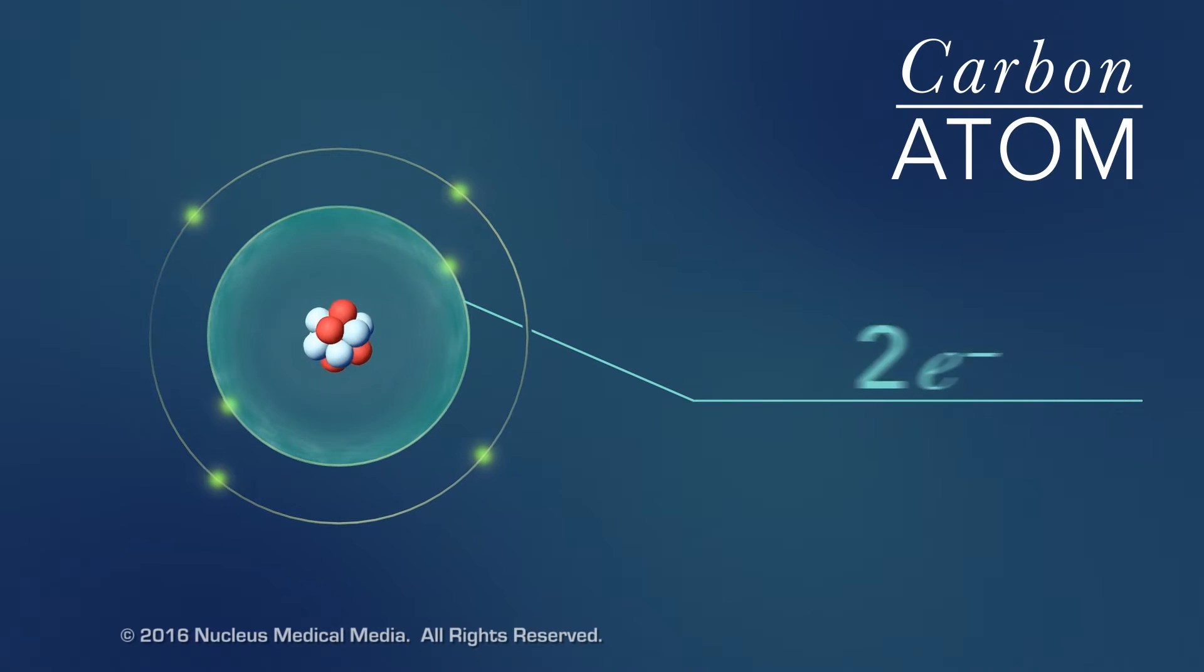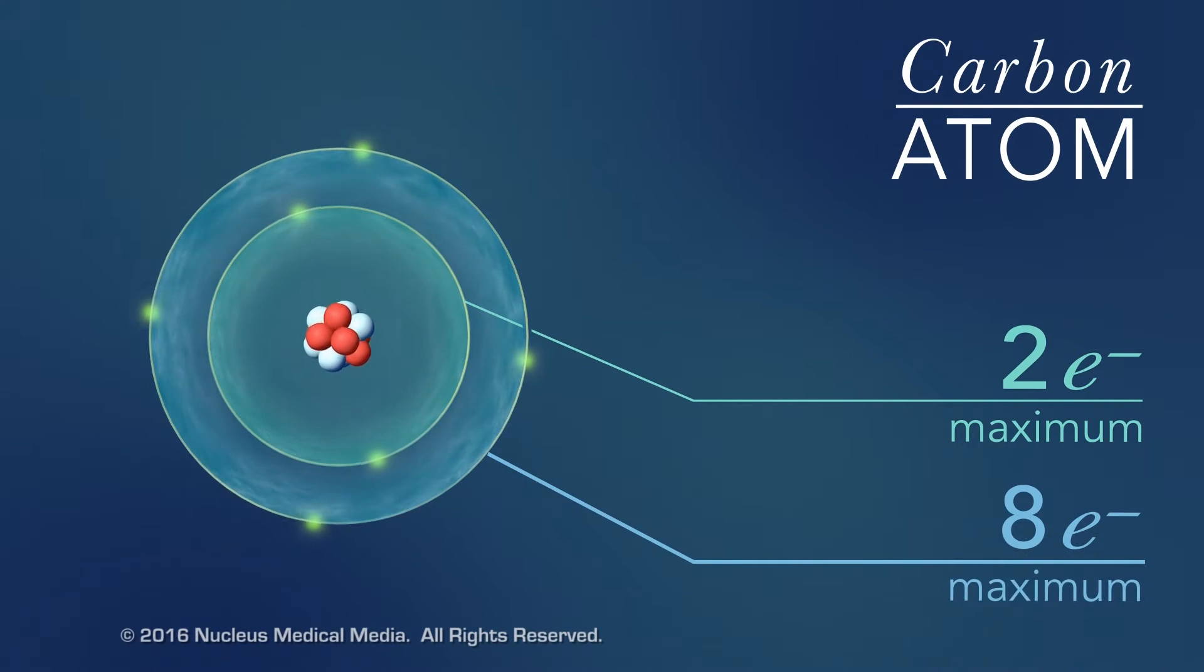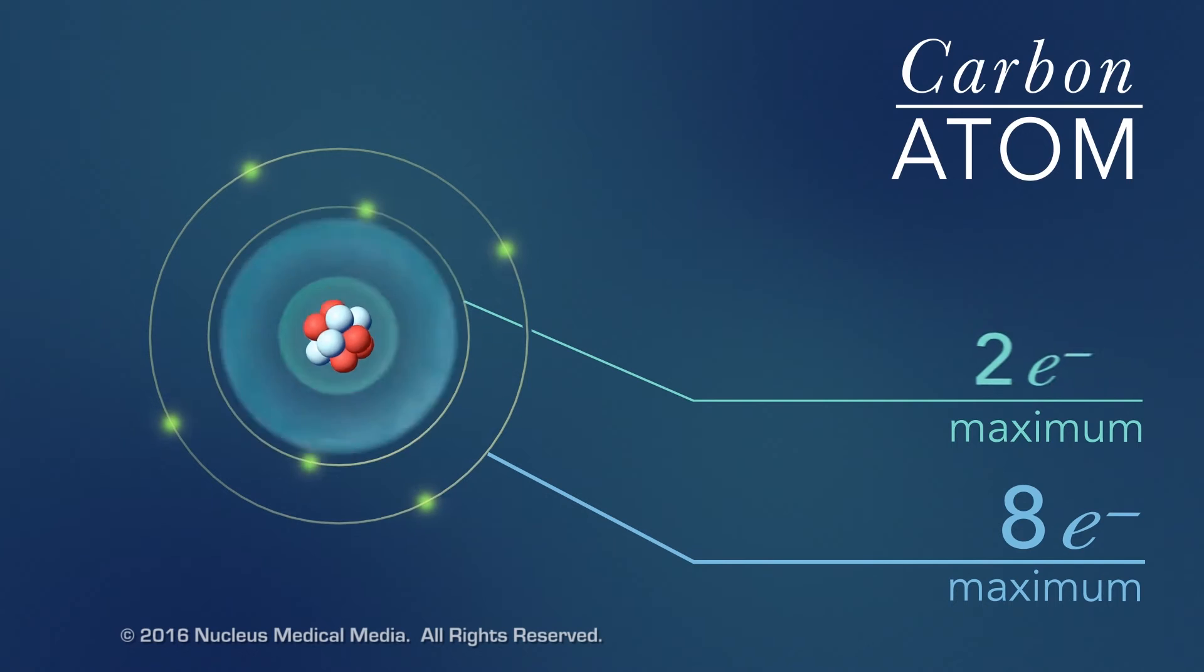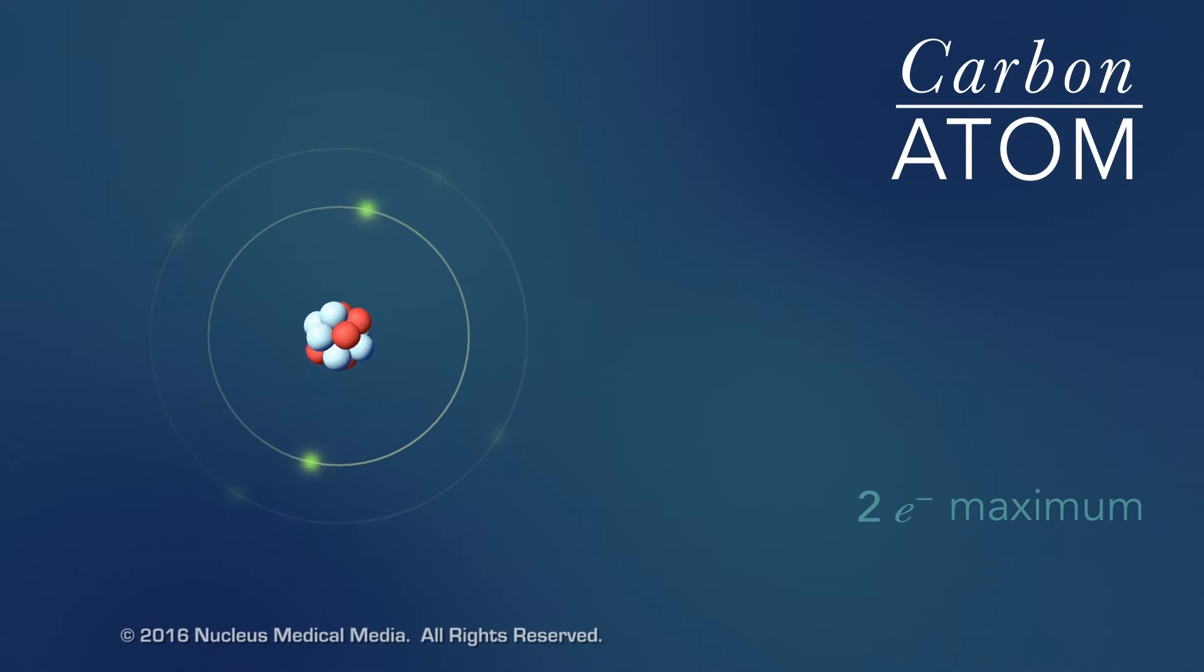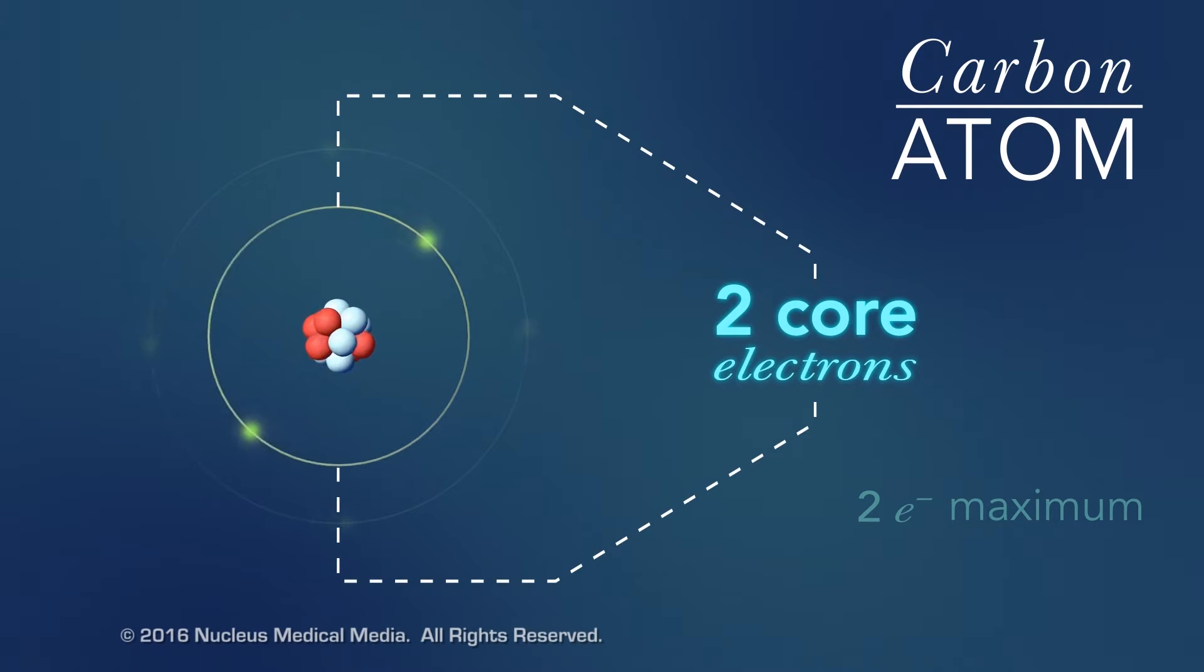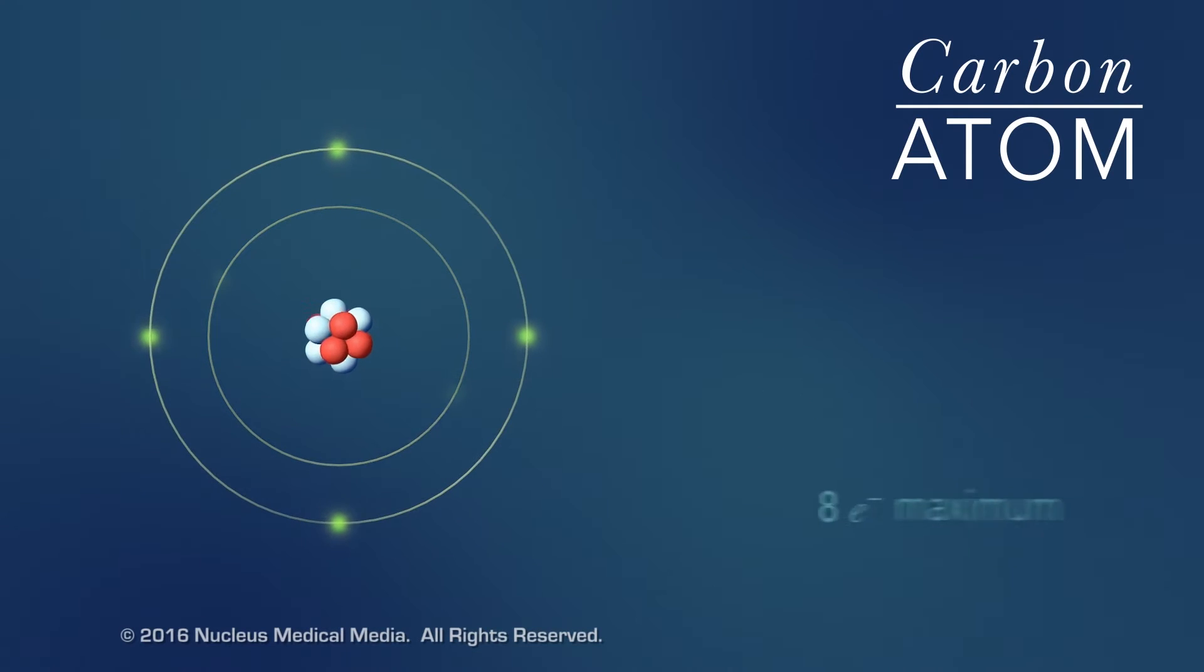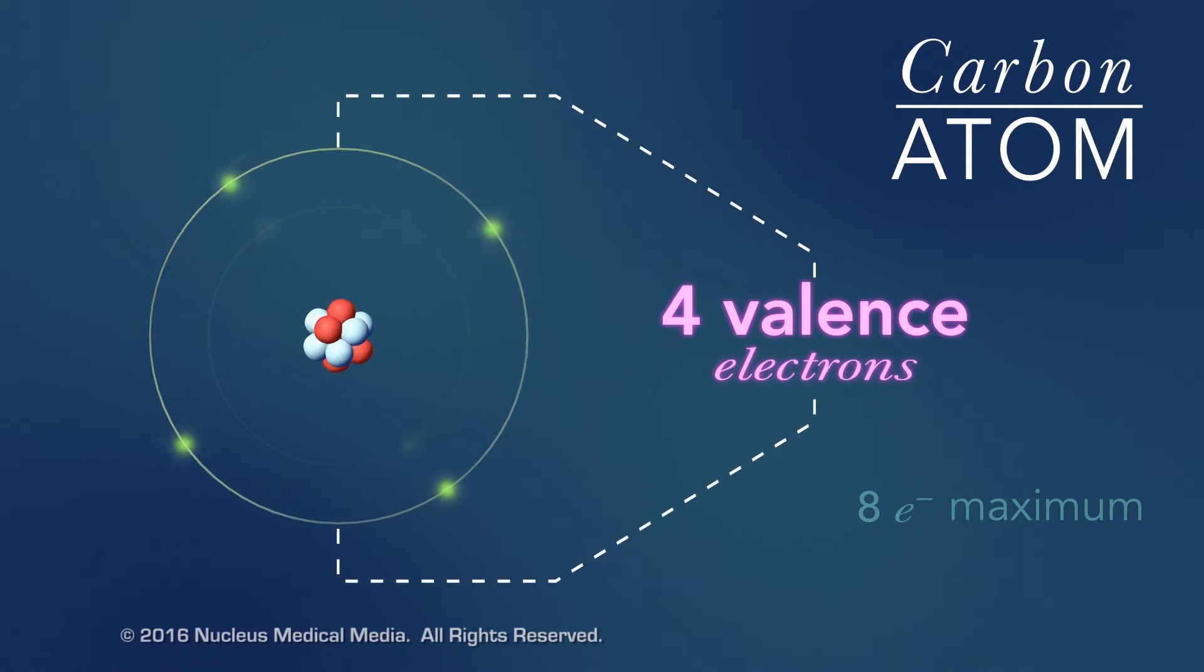The innermost shell of any atom can hold a maximum of two electrons, and the next shell can hold up to eight electrons. So two of the electrons in carbon fill the first shell, and the remaining four electrons are in the next shell. The two electrons in the first shell are carbon's core electrons. The four electrons in the outer shell are carbon's valence electrons.